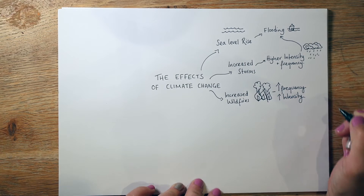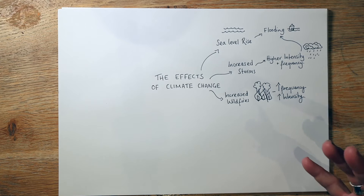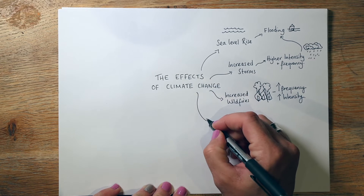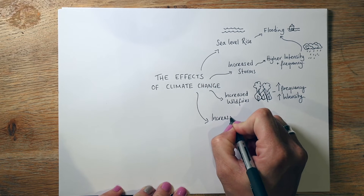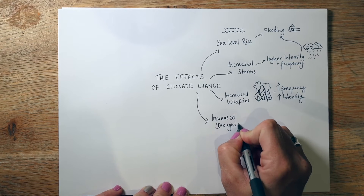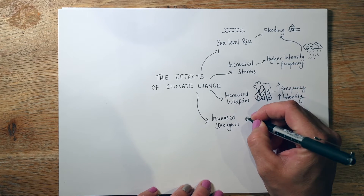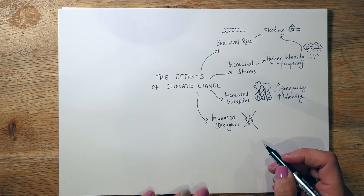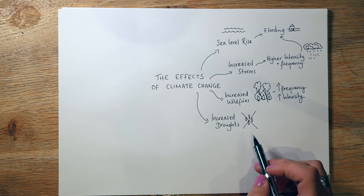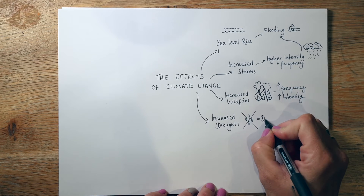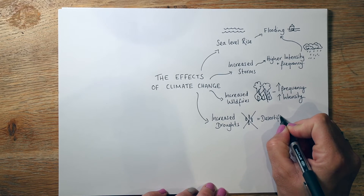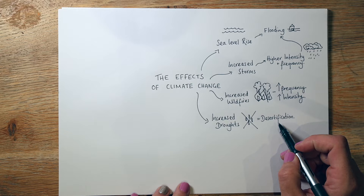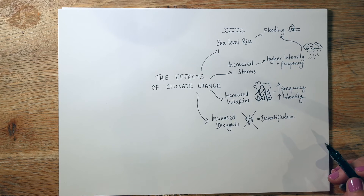If you come to answer a question on these in a geography exam, please use these words about the frequency — there being more of them — and the intensity — them being stronger. Linked to wildfires are the increased droughts we're seeing. A drought, if you're not sure, is a period of time with a lack of water and a lack of rainfall. A drought is a really big issue and this is causing something called desertification — that's where healthy land with trees and shrubs is becoming desert because there is just such a lack of rainfall for such a long time.